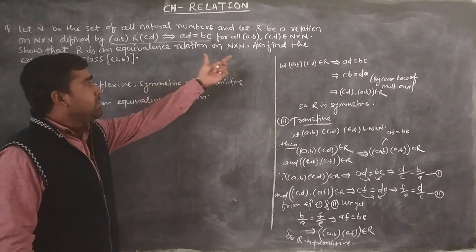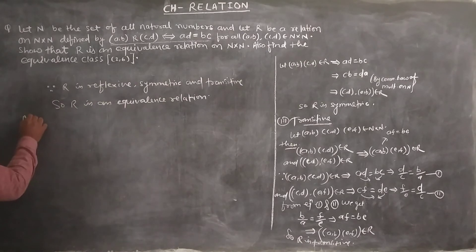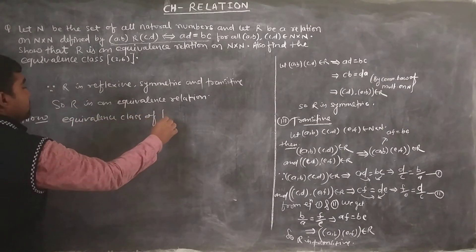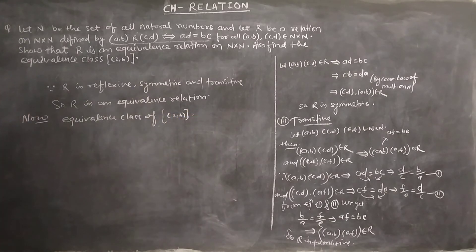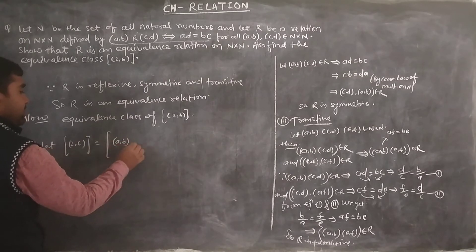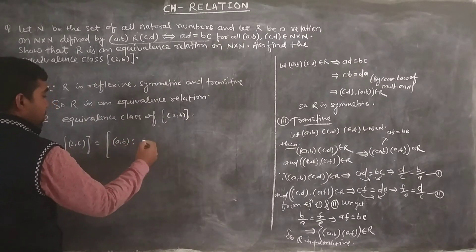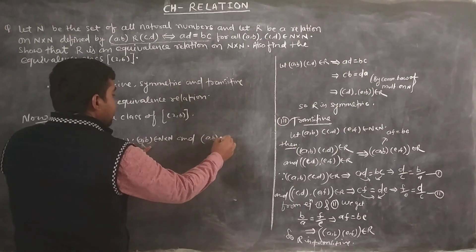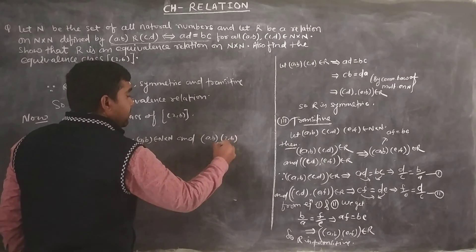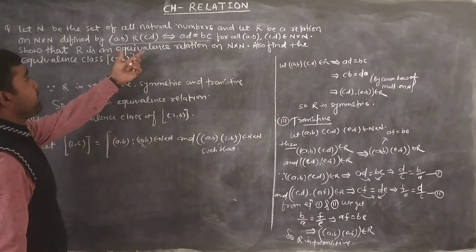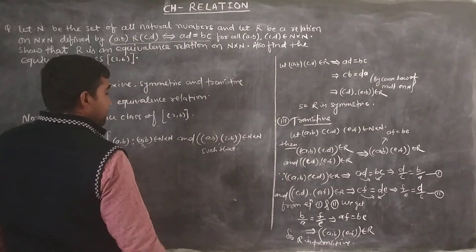Also find the equivalence classes of (2,6). The equivalence class of (2,6) is defined as the set of all (a,b) belonging to N×N such that (a,b) R (2,6). By the relation definition, this means 2·b equals 6·a.